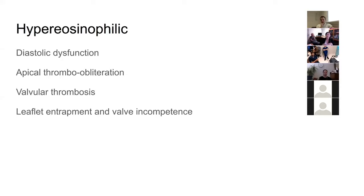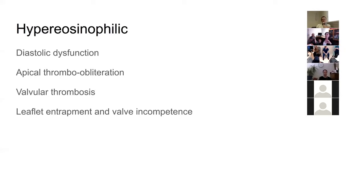Hypereosinophilic cardiomyopathy is interesting — high eosinophils cause eosinophilic infiltration that preferentially obliterates the left and right apices. You need to differentiate it from apical thrombosis because it can look similar. These patients get clots due to the high inflammatory state and can present with strokes, embolic phenomena, and subvalvular thrombosis trapping leaflets causing mitral and tricuspid regurgitation.